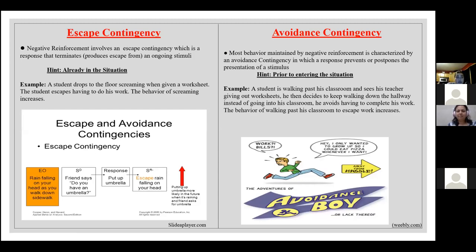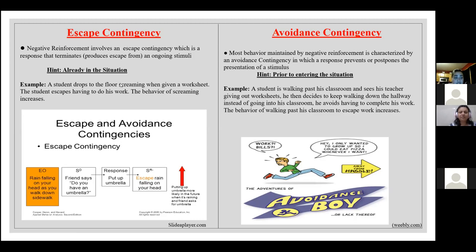Next we have escape contingency. Negative reinforcement involves an escape contingency — a response that terminates an ongoing stimulus. The way I remember it: escape means you're already in the situation. Example: a student drops to the floor screaming when given a worksheet; the student escapes having to do the work, and the behavior of screaming increases. Another example: rain is falling on your head; a friend asks if you have an umbrella; you put up the umbrella and escape the rain; putting up the umbrella becomes more likely in the future.